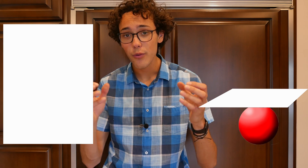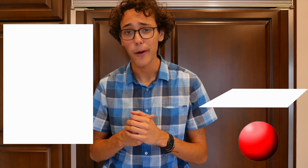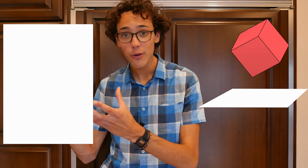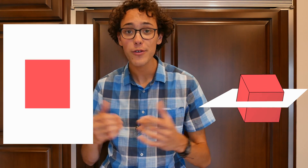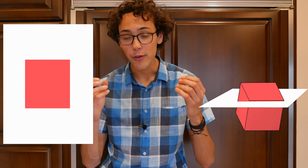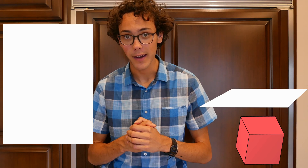Now if you did this with a sphere, you would see a tiny circle grow into a larger circle, and then shrink and disappear again. And keep in mind you can also project the shapes in other orientations too. For example, if you shoot this cube edge first, a two-dimensional creature would see a rectangle pop into existence, grow, and then shrink and pop out of existence again.